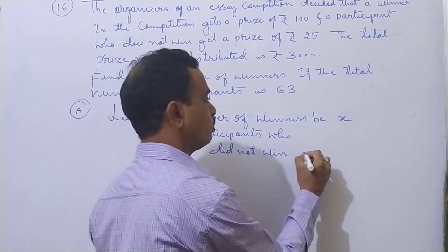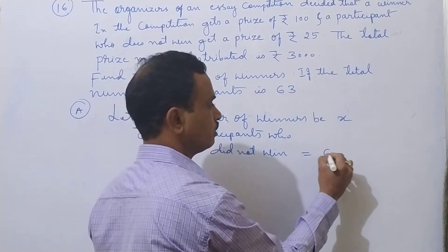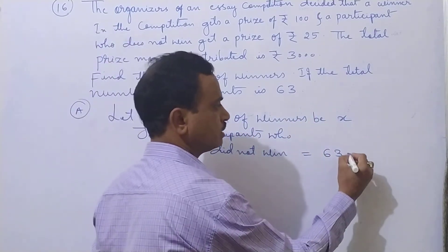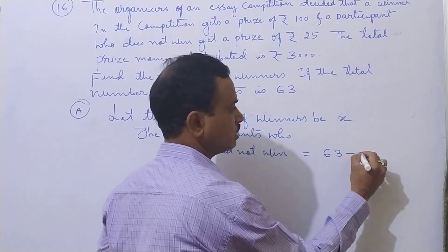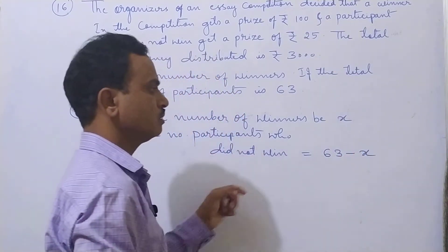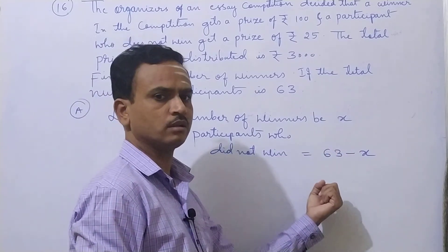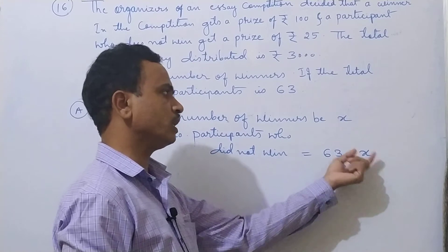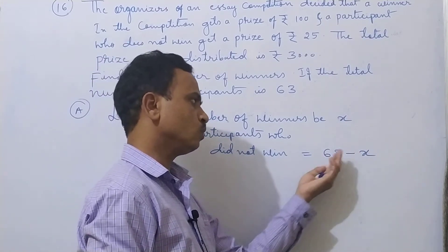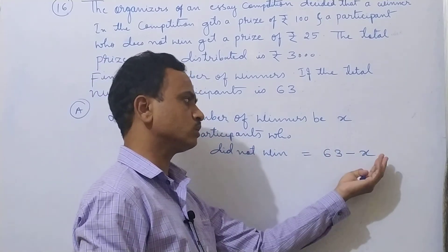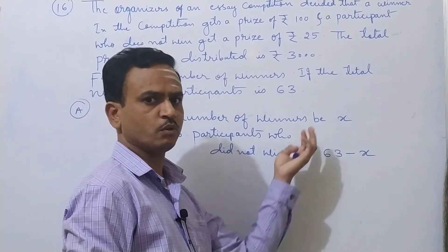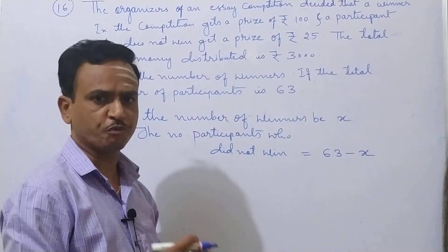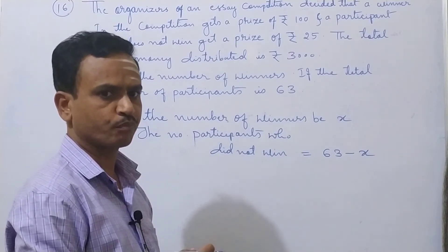Total number of participants is 63. Number of winners is x. So in the total participants, we subtract the winners' number and we get the number of participants who did not win, which is 63 minus x.